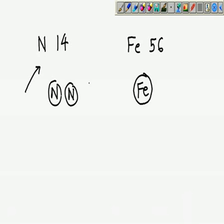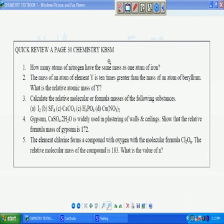Three of nitrogen perhaps has 42. How about another 14? Would you get 56? So four pieces of nitrogen equals to one iron. Now let's proceed with question number two.